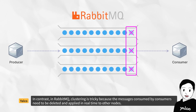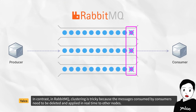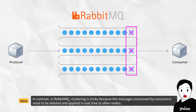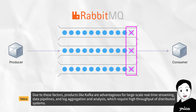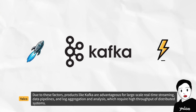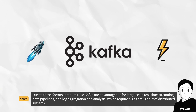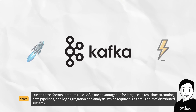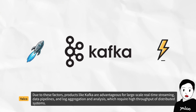In contrast, in RabbitMQ, clustering is tricky because the messages consumed by consumers need to be deleted and applied in real time to other nodes. Due to these factors, products like Kafka are advantageous for large-scale real-time streaming, data pipelines, and log aggregation and analysis, which require high throughput of distributed systems.